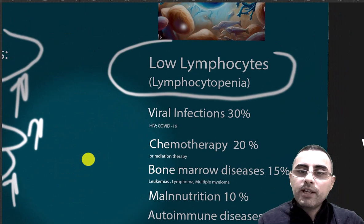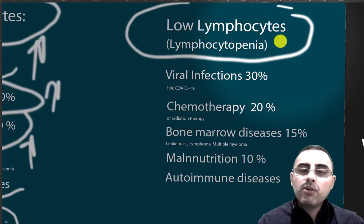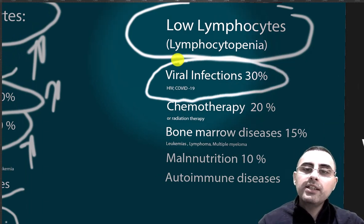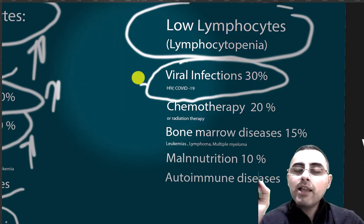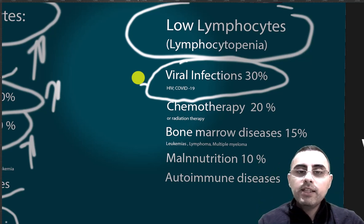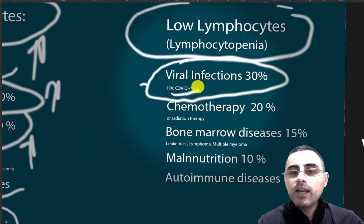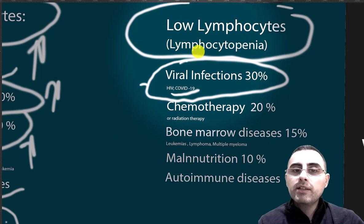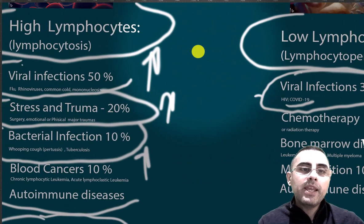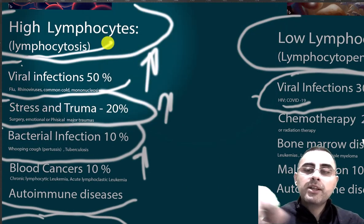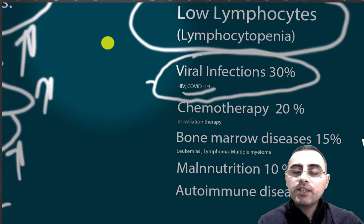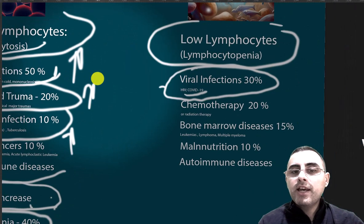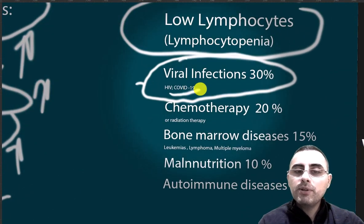Low lymphocyte level can be caused by viral infections such as HIV and COVID-19. COVID-19 highly correlates with low lymphocyte levels, and in severe COVID-19 cases, there is a severe decrease in lymphocyte levels. Low lymphocyte level is called lymphocytopenia or lymphopenia, while high lymphocyte level is called lymphocytosis. Note that many viral infections correlate with high lymphocyte levels, while COVID-19 and HIV are associated with low levels.